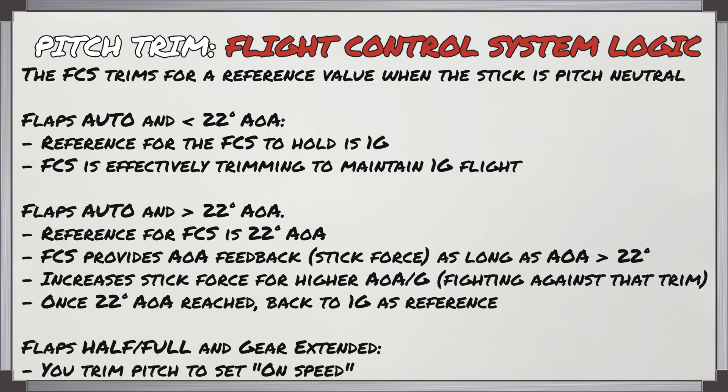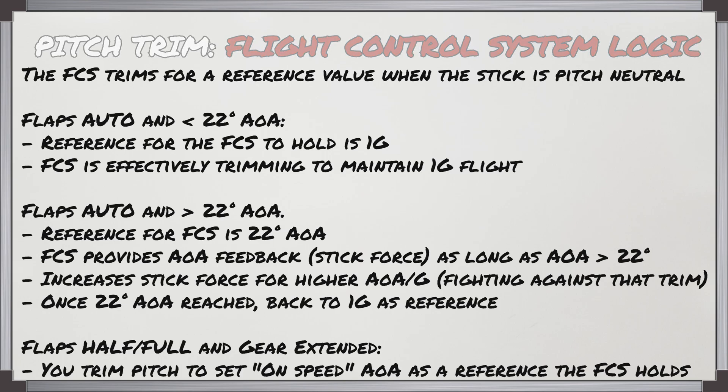This will increase the stick force needed for higher angle of attack and G, so you're fighting against that trim. Once that 22 degrees AOA is reached, you go back to 1g as a reference. When you use flaps half or full with the gear extended for landing, you're going to trim the pitch manually to set an on-speed AOA as a reference which the FCS will hold for you.